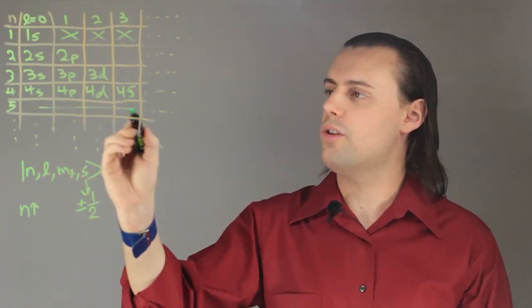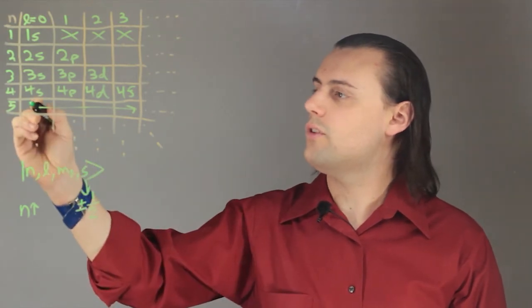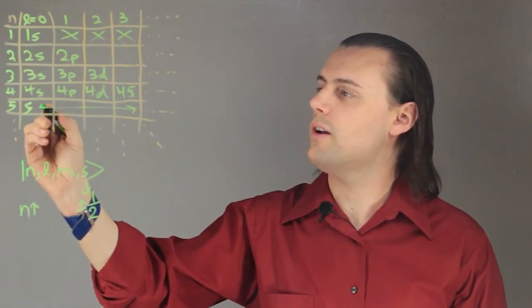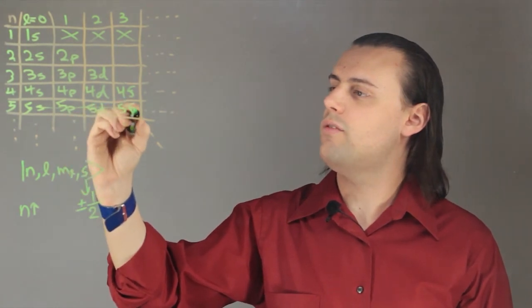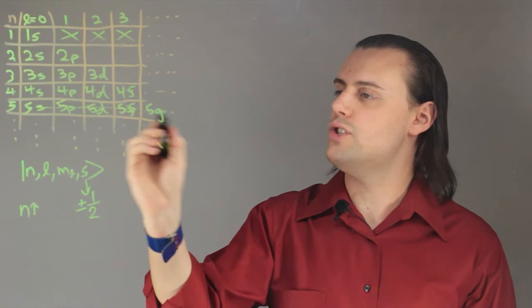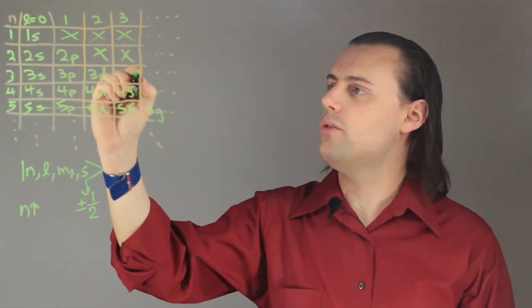And so on and so forth for the other energy levels. So let me just finish off 5. We have 5s, 5p, 5d, 5f, and 5g all the way out here. And these orbitals are forbidden.